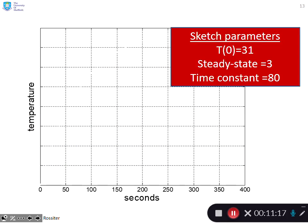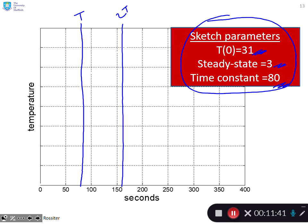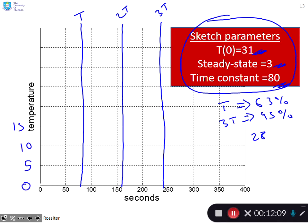The first thing I've done is summarized my key information: start point 31, end point 3 (that's 31 minus 28), and time constant of 80. I put the time constants on. I know that after T you get 63% movement, after 3T you get 95% movement, and the total movement is 28.